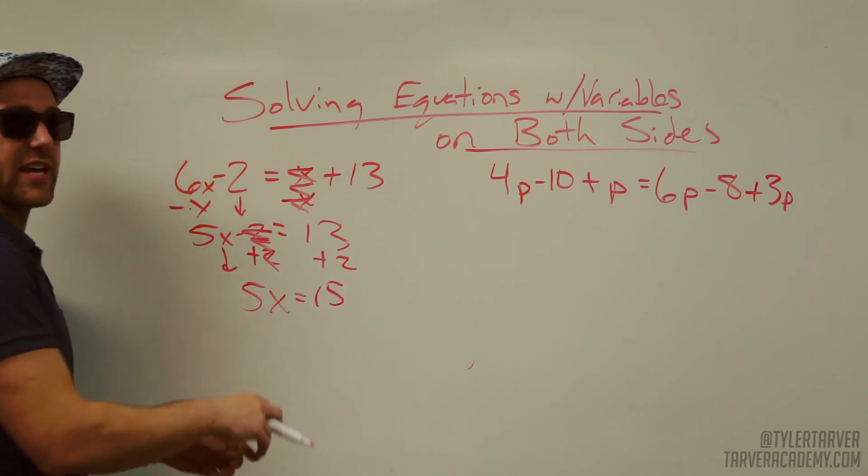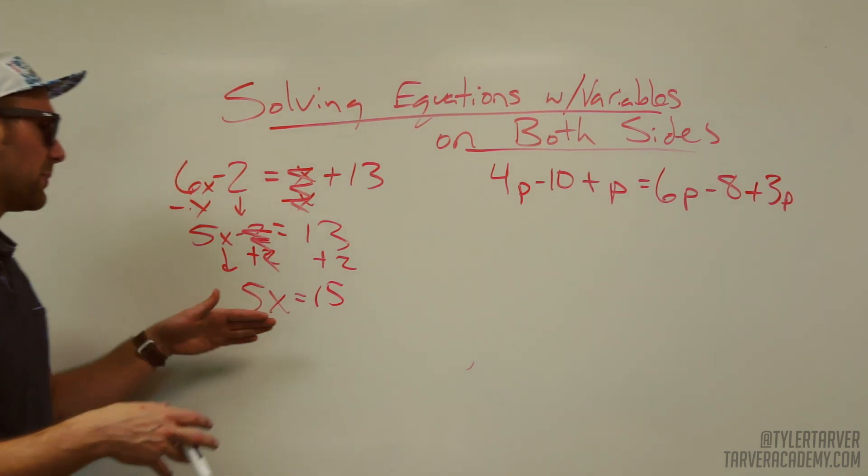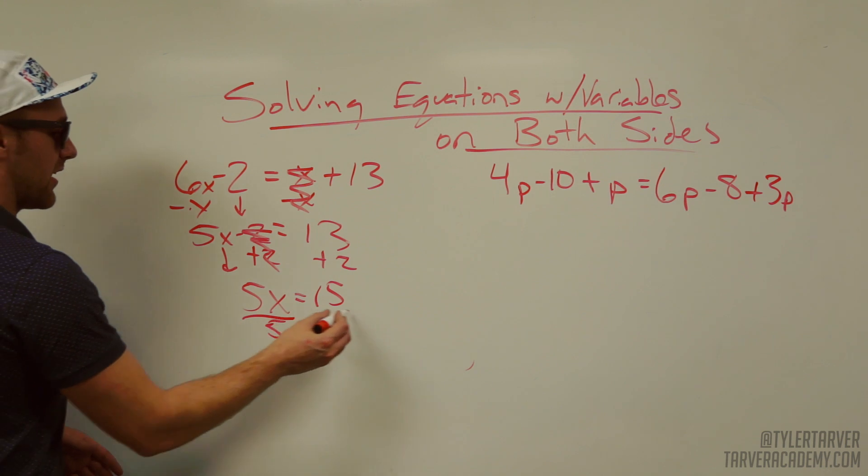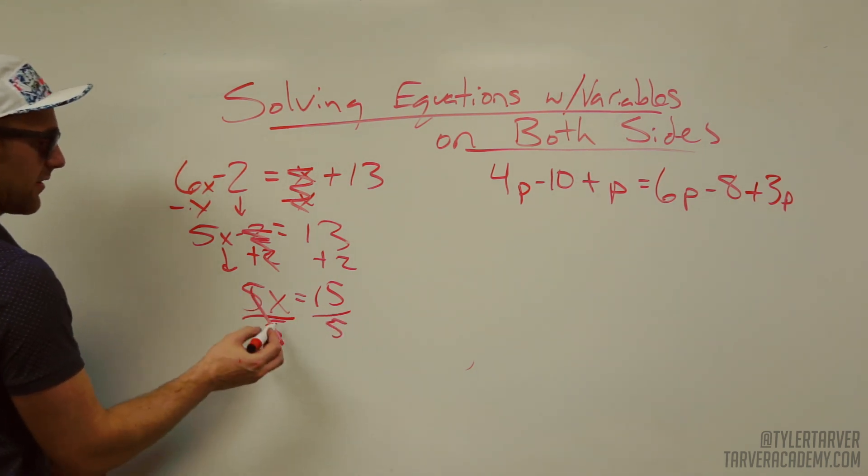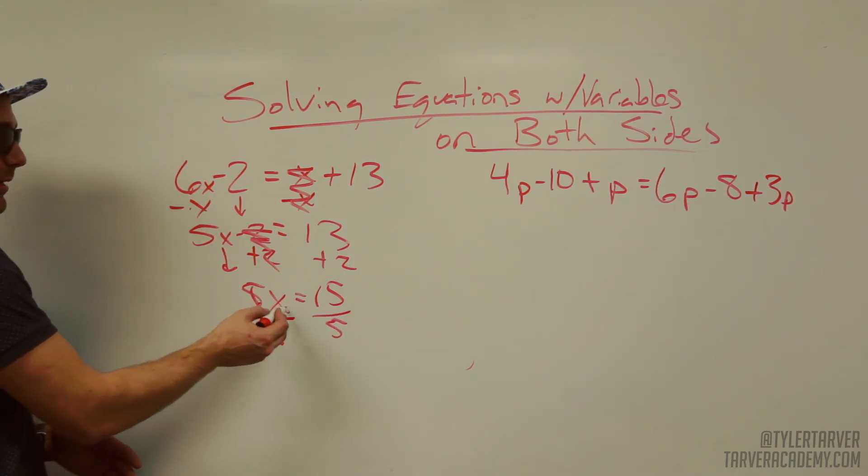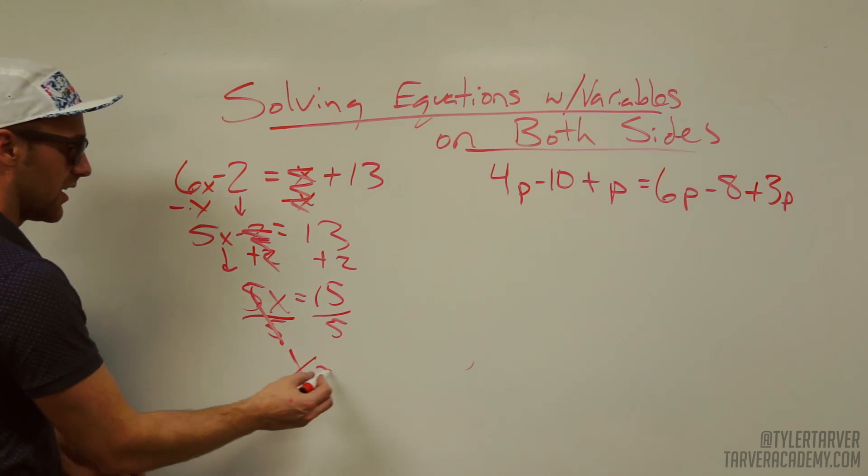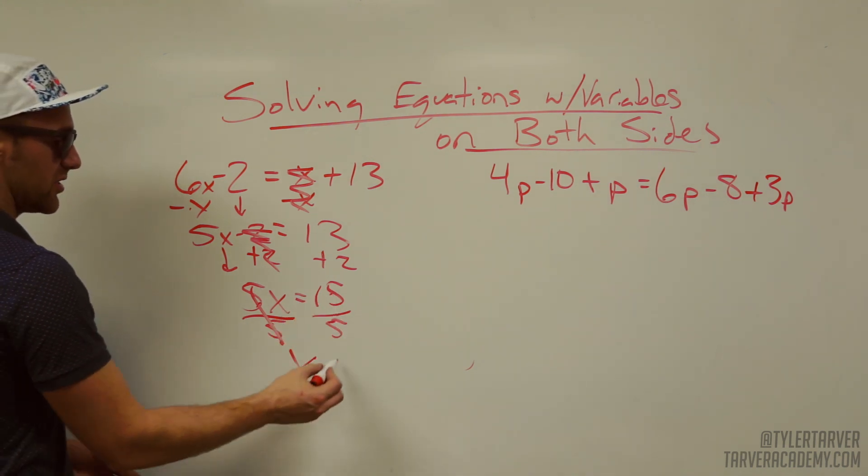Now, I've got 5 times x. Remember, you do the opposite. So, what's the opposite of multiplying times 5? Dividing by 5. Cancels out, because 5 divided by 5 is 1, and 1 times x is x. X equals 15 divided by 5, which is 3.